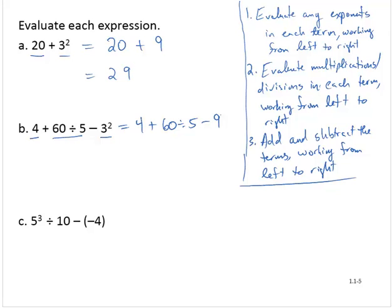So there are no further exponents. Now I'm going to evaluate any multiplications or divisions within terms. So I have a division here, the 60 divided by 5, which is 12. So now I have 4 plus 12 minus 9. And now I'll add and subtract as I see them from left to right. 4 plus 12 is 16, and 16 minus 9 is 7.